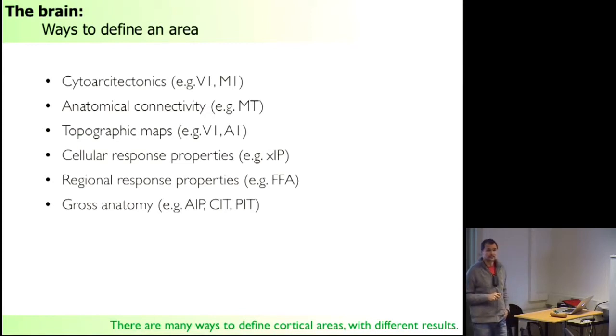You can define an area based on the anatomical connectivity. So for example, area MT, we will talk about this at length in a few weeks' time, receives a specific type of projection, and you can look which fraction of the cortex has these afferents, and you can delineate area MT.